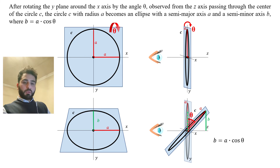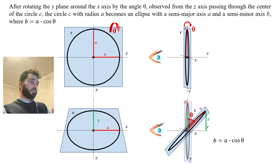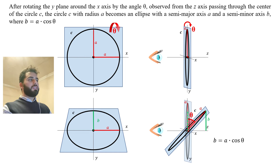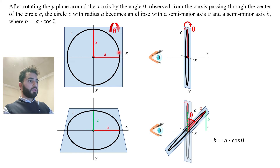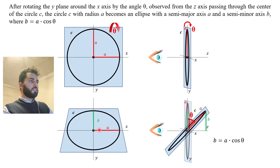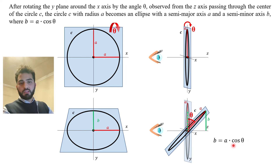To summarize: after rotating the y-plane around the x-axis by angle theta, observed from the z-axis passing through the center of the circle, the circle c with radius a becomes an ellipse with semi-major axis a and semi-minor axis b, where b is equal to a times cosine theta.